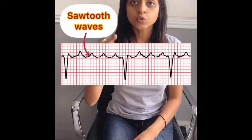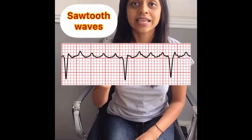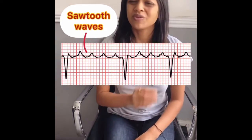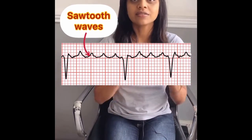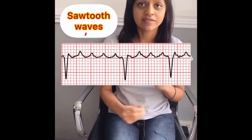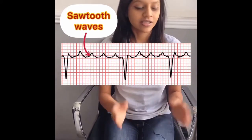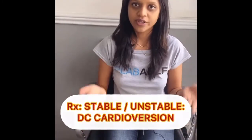First we have atrial flutter. In atrial flutter you will see sawtooth waves — sawtooth waves in lead II indicate atrial flutter. Why do we get atrial flutter? It means that apart from the SA node, there are other electrical impulses originating and traveling in the heart. For atrial flutter, whether stable or unstable, you will give DC cardioversion.